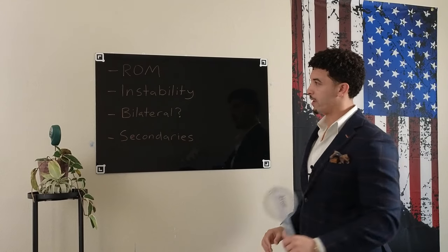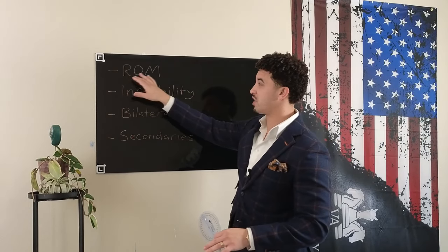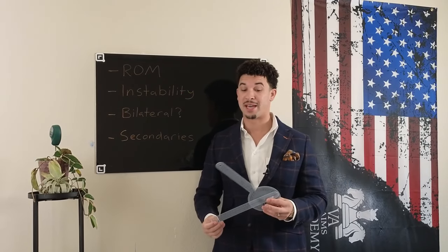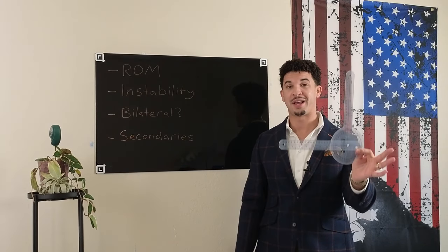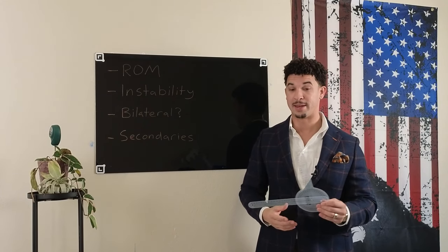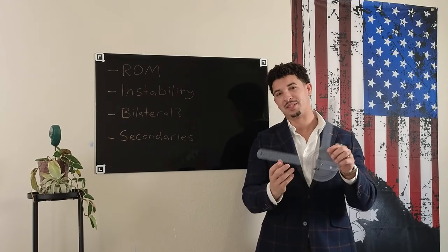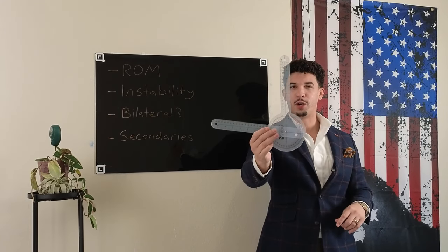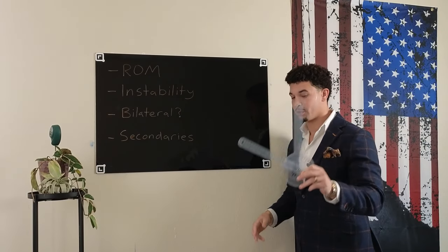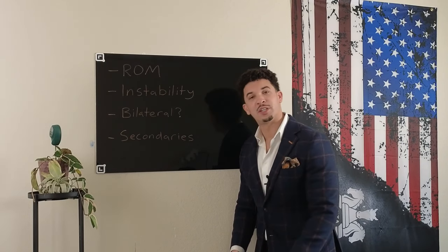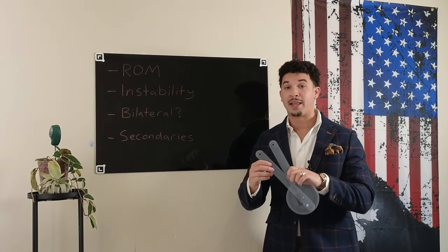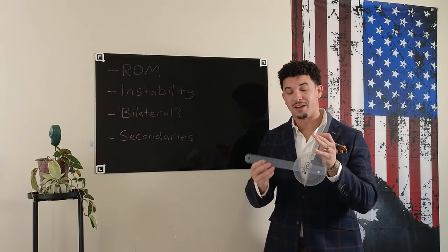Let's go into how you are rated. Number one is range of motion. You need to know what to expect at the C&P exam. When you go to the compensation and pension exam, this is the examination they schedule you for once you file your knee claim. The examiner will use a tool called the goniometer — it measures your range of motion. They're going to measure how much you can bend and extend the knee. That measurement itself is a rating, not the pain level, but the actual range of motion measurement.